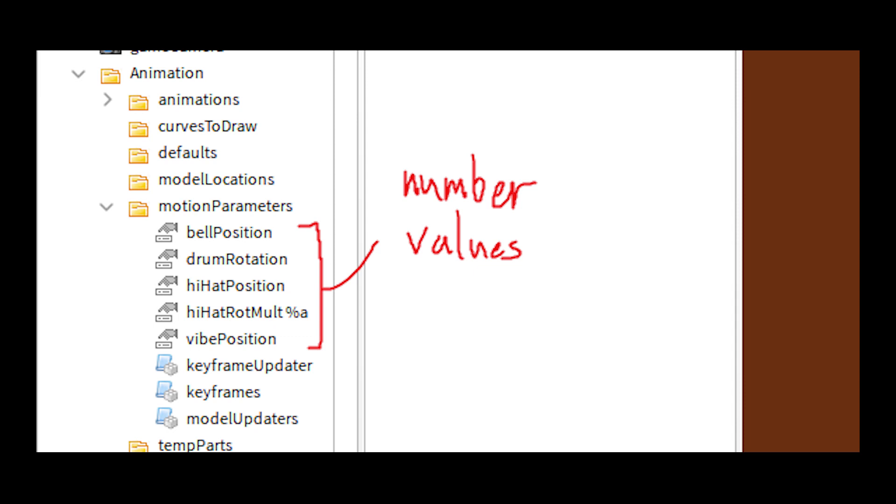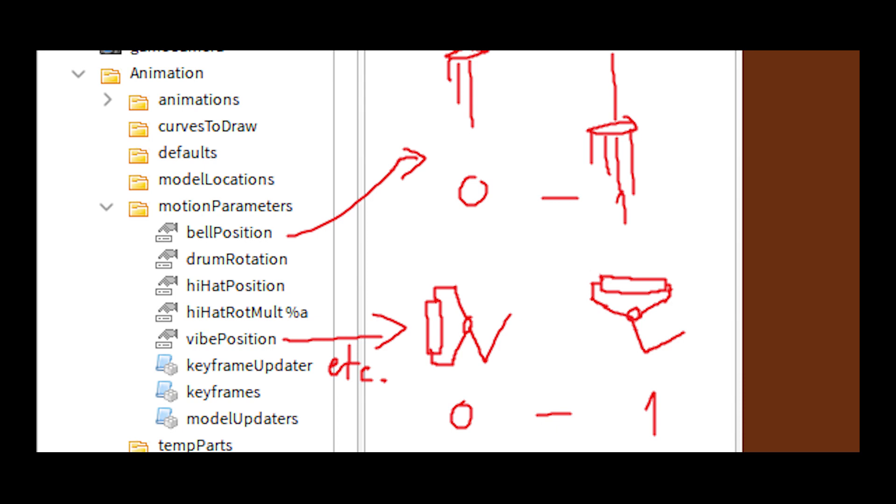Here, the number values are updated every frame, which they describe the state of an instrument. For example, the vibe position runs from 0 to 1. The drum rotation is the four-way percussion rotation in radians.